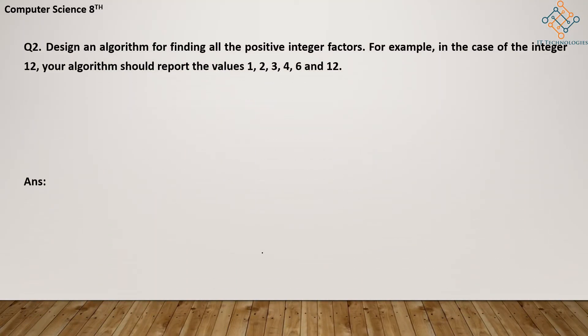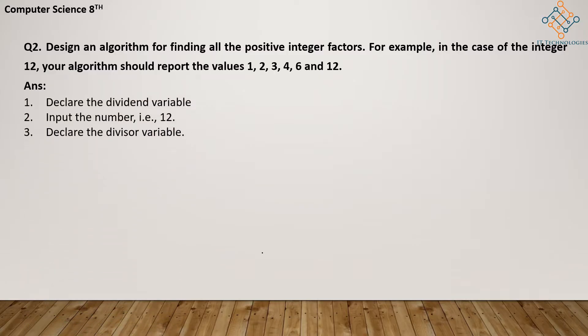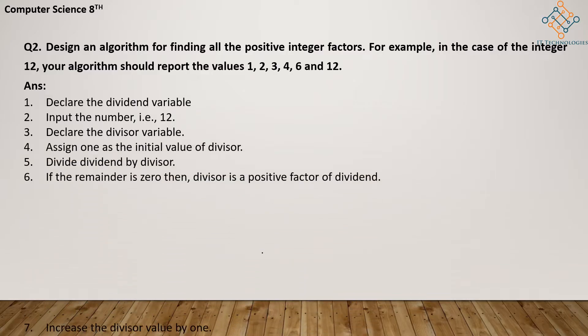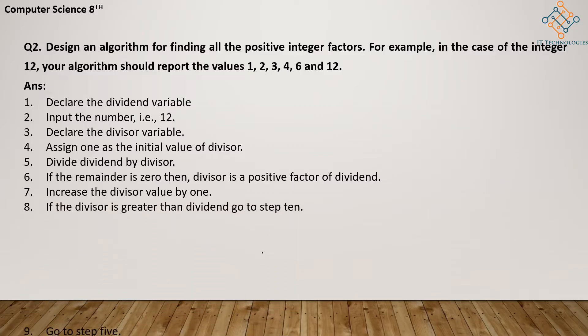Question number 2: design an algorithm for finding all the positive integer factors. For example, in the case of the integer 12, your algorithm should report the values 1, 2, 3, 4, 6, and 12 — these are all the divisors of the number 12. First, we declare the dividend variable. The input number, let it be 12, will be saved in the dividend variable.